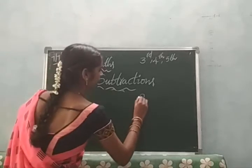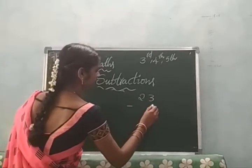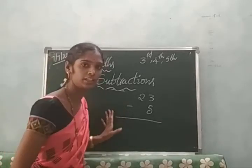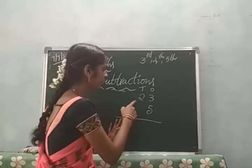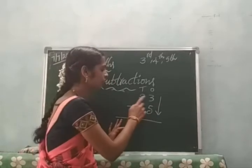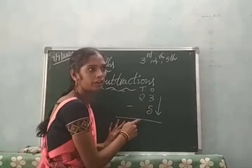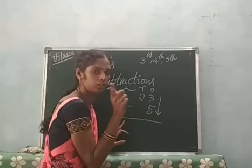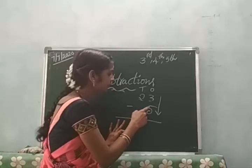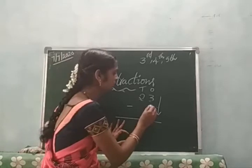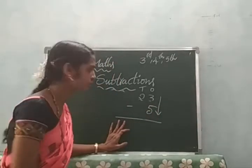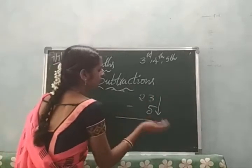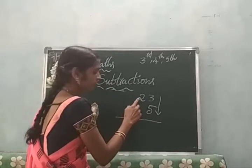Let me give you one more example: 23 minus 5. So let us see this example. We have the ones place and the tens place. First subtract the ones place. So 23 minus 5 — there are 3 ones and 2 tens. We need to subtract 5 ones from 3 ones, but we cannot subtract 5 from 3.